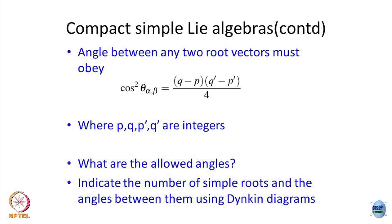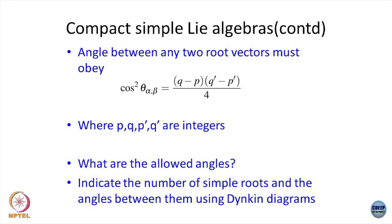This can be exploited using raising and lowering operators. How many steps you can go: from one state, p units above and q units below you can go, and so on. You can get a condition on the angle between any two root vectors. I am not going to derive this — anybody interested can look it up; Georgi talks about it. What we need is that the angle between any two root vectors in any Lie algebra is constrained by these integers: q is an integer, p is an integer, q-prime is an integer, p-prime is an integer, and there is a condition which you can derive.